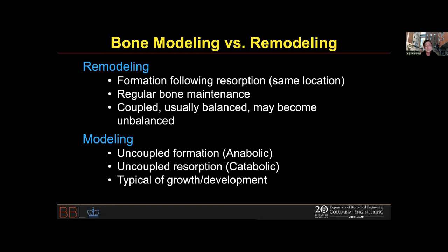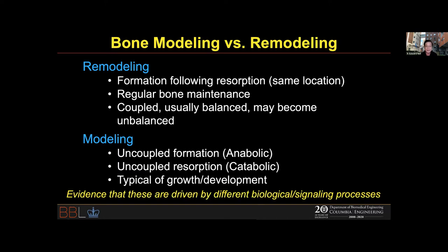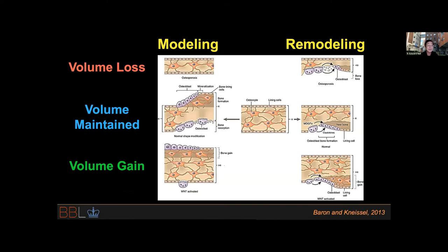There are two processes that shape bone: bone modeling and remodeling. Remodeling is bone formation following resorption at the same location — normally coupled and balanced, but it can become unbalanced. Modeling is decoupled — you can have uncoupled formation, which we call anabolic, or uncoupled resorption, which is catabolic. Previously, people thought modeling only occurred in growth and development, but our study finds it occurs everywhere. Both processes can control bone mass, leading to either volume loss or gain.